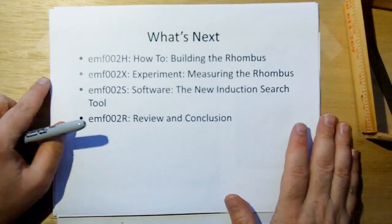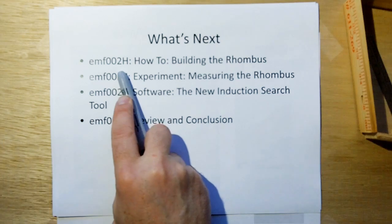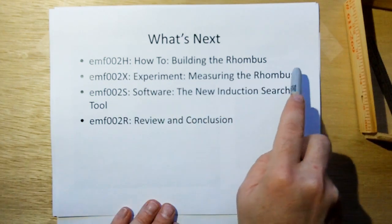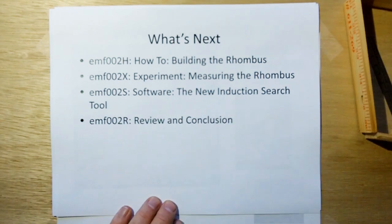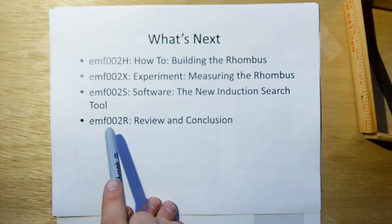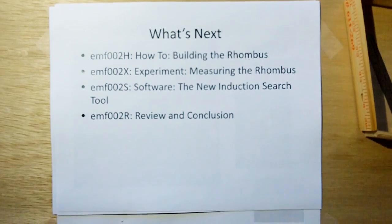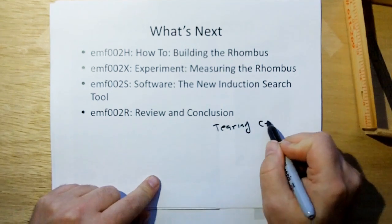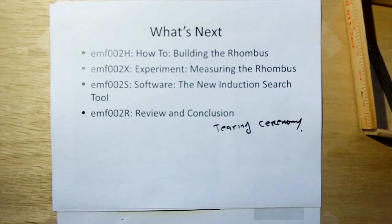Okay. So that's where we're going. The next step is EMF002H is how to build the rhombus. 2X is the experimental measuring the rhombus. 2S is the software where we're going to show the new induction search tool and show you how to enter the data that we measured and then EMF002R we're going to review and draw the conclusion and in here will be another tearing ceremony. Thank you very much.